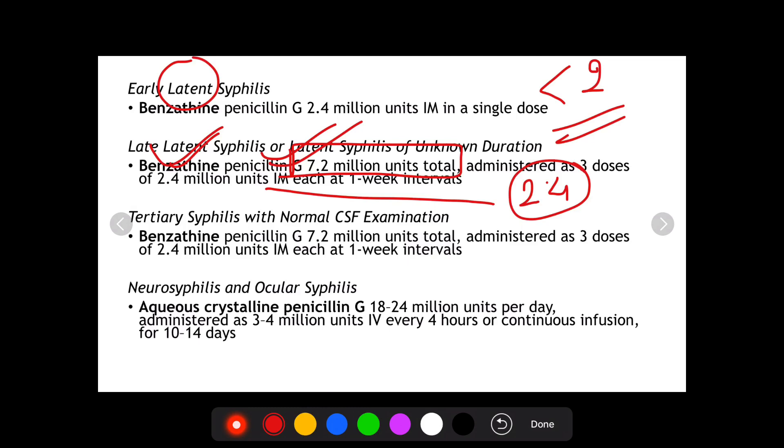As far as tertiary syphilis is concerned, if it's gummatous or cardiovascular in nature, and neurosyphilis hasn't occurred, that is with a normal CSF examination, the treatment is similar to late latent syphilis, that is 7.2 million units in total, that is 2.4 million units weekly for 3 weeks.